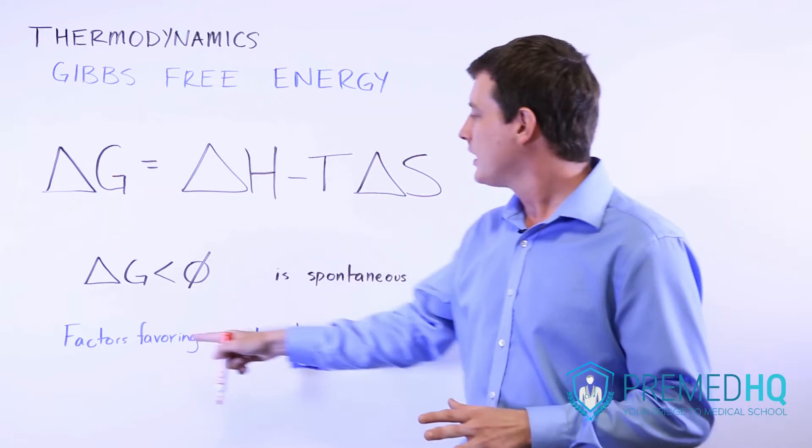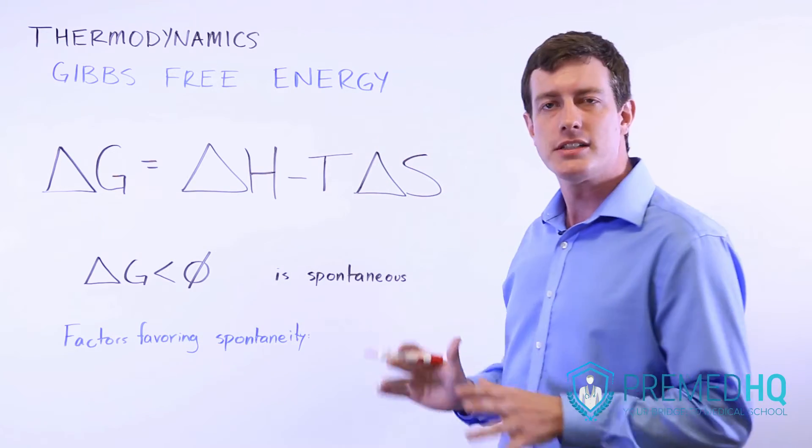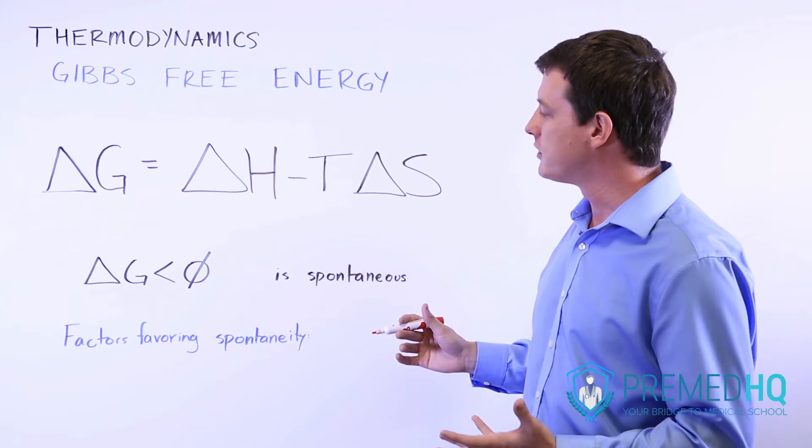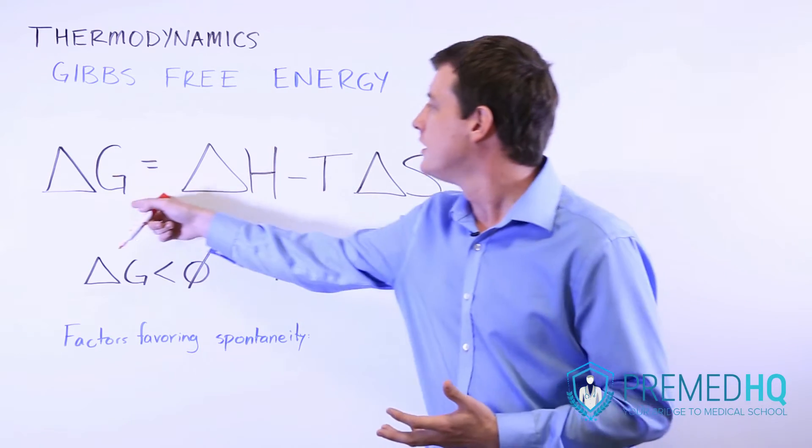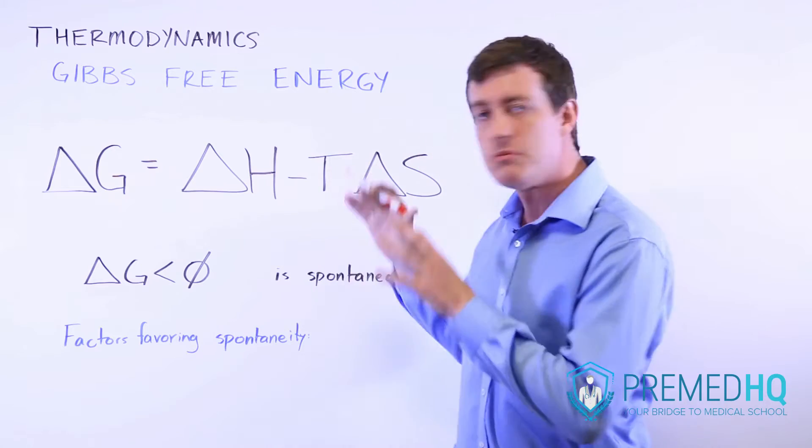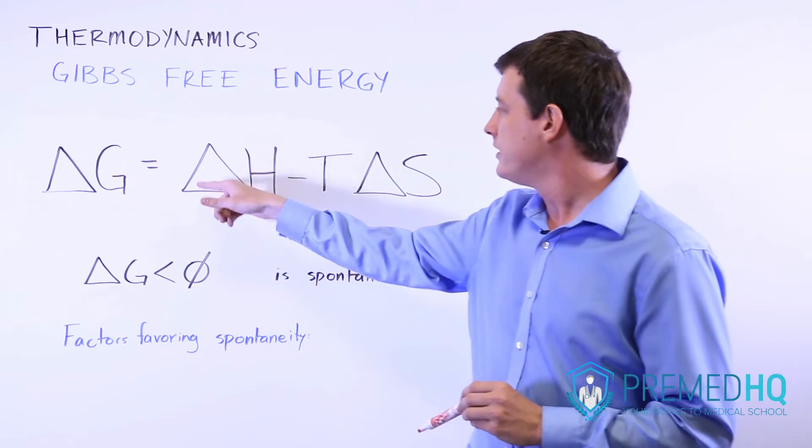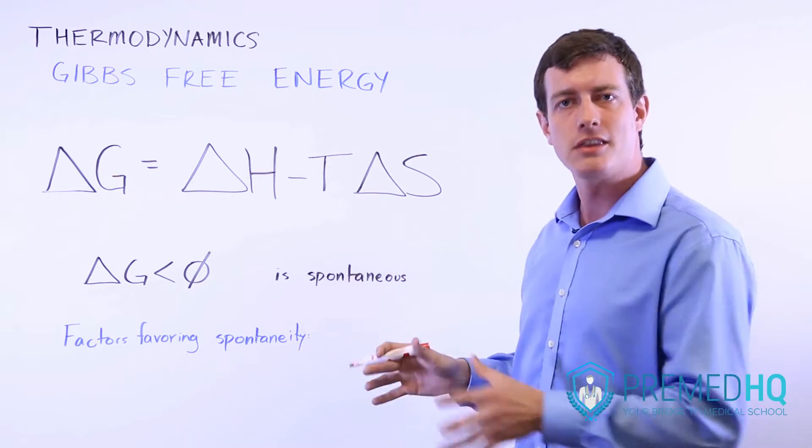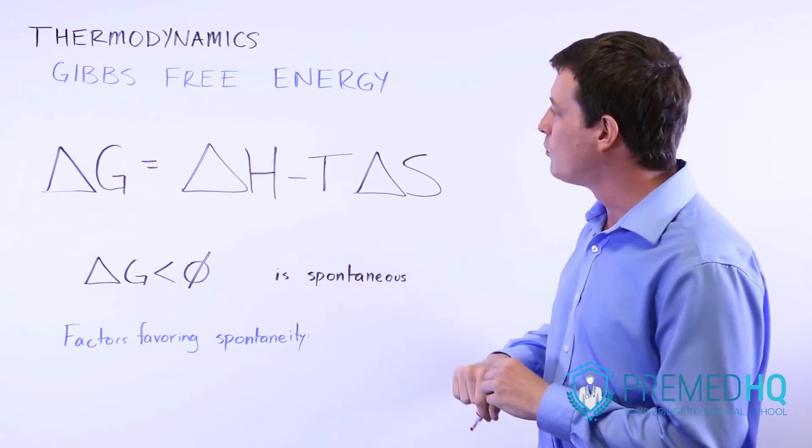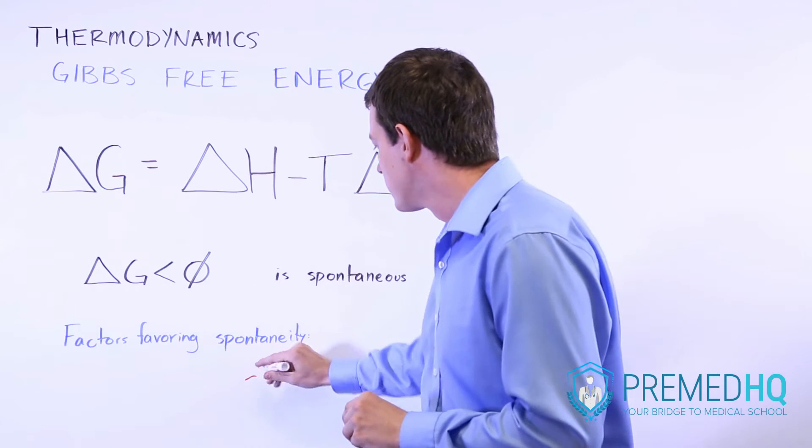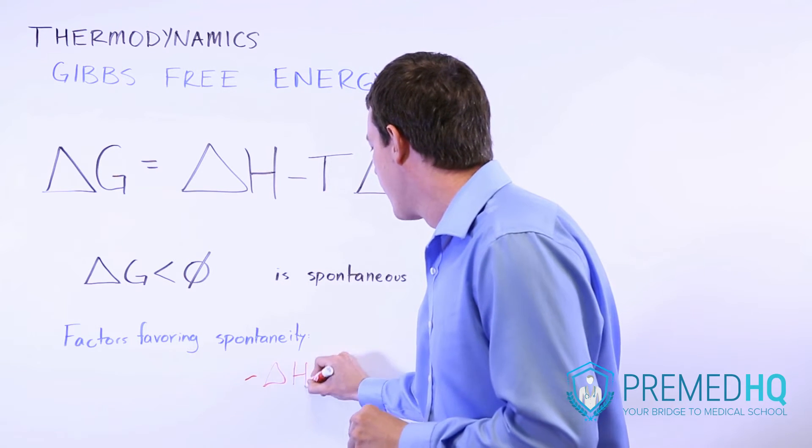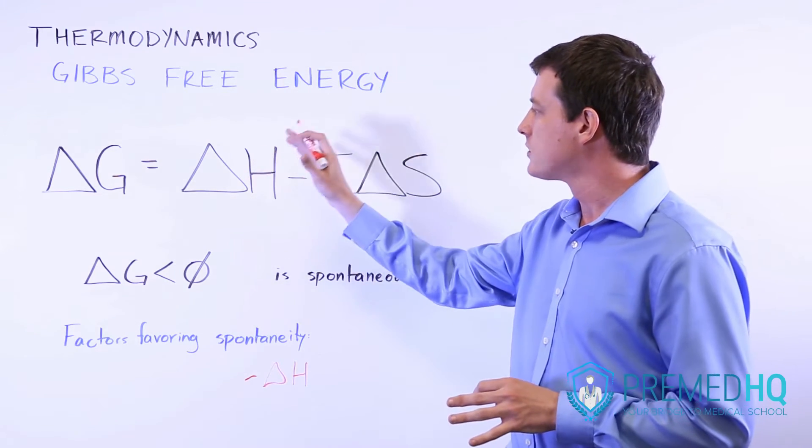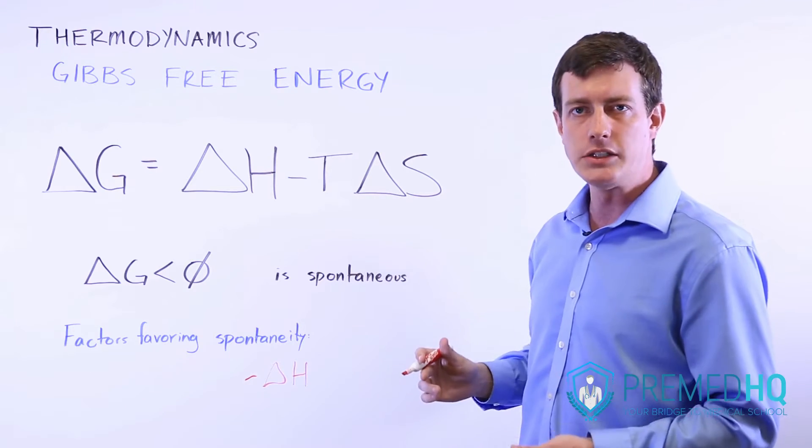When you're looking at factors that favor the spontaneity of some reaction, the best way to look at it is looking for the factors that encourage the change in Gibbs free energy to be negative. Notice that if we have a negative delta H, an exothermic change in enthalpy of the reaction, then that will favor the spontaneity of this reaction. So a negative delta H, an exothermic reaction, is something that favors spontaneity and makes a reaction more likely to occur.